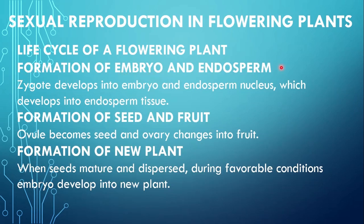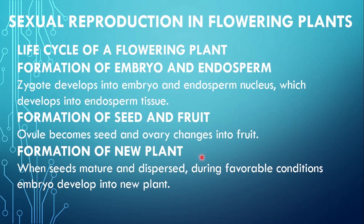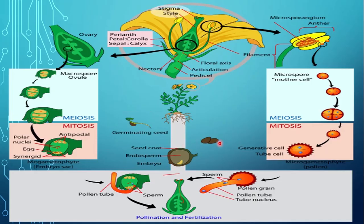The next step is the formation of embryo and endosperm. After fertilization, the zygote develops into embryo, while the endosperm nucleus develops into endosperm tissue. Ovary mein maujood ovules future fruit ke seeds banate hain, while jo ovary hai that makes the fruit. Formation of new plant: when seeds mature and disperse, during favorable conditions the embryo develops into a new plant. Seeds germinate karke ek new plant mein develop ho jate hain. Is tarah se flowering plants apne life cycle ko complete karte hain by using alternation of generation.